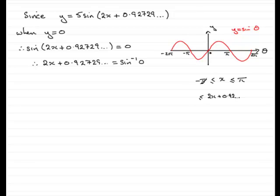I double the minus pi, so that's going to be minus 2 pi. And I would be adding 0.92729. And over this end, I would double the pi there, 2 pi, and add 0.92729.